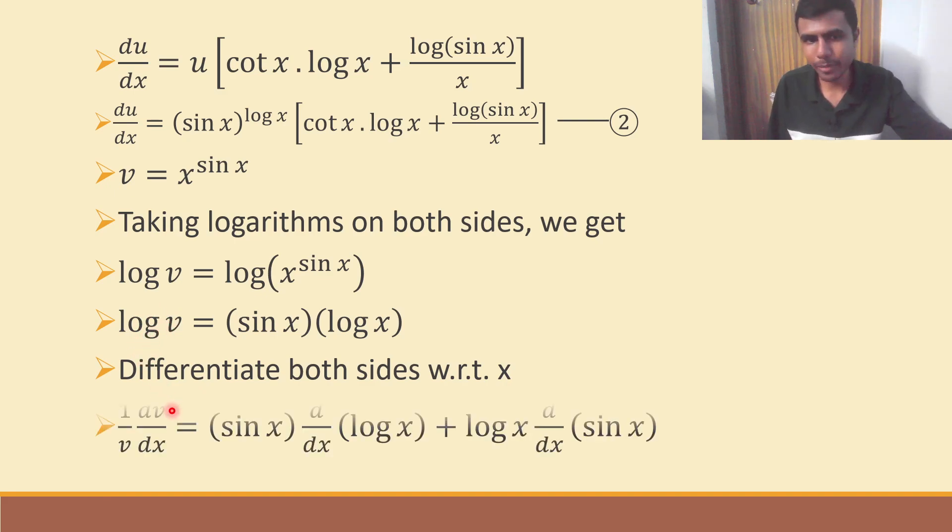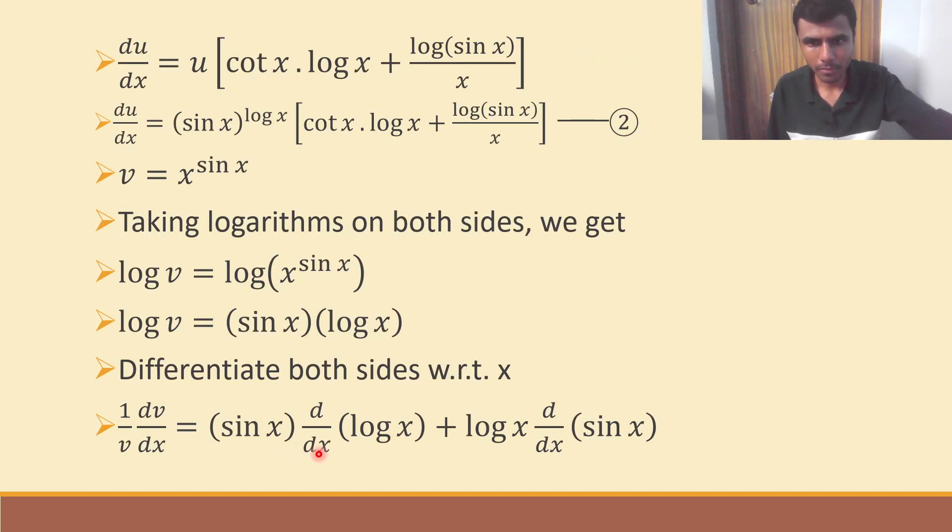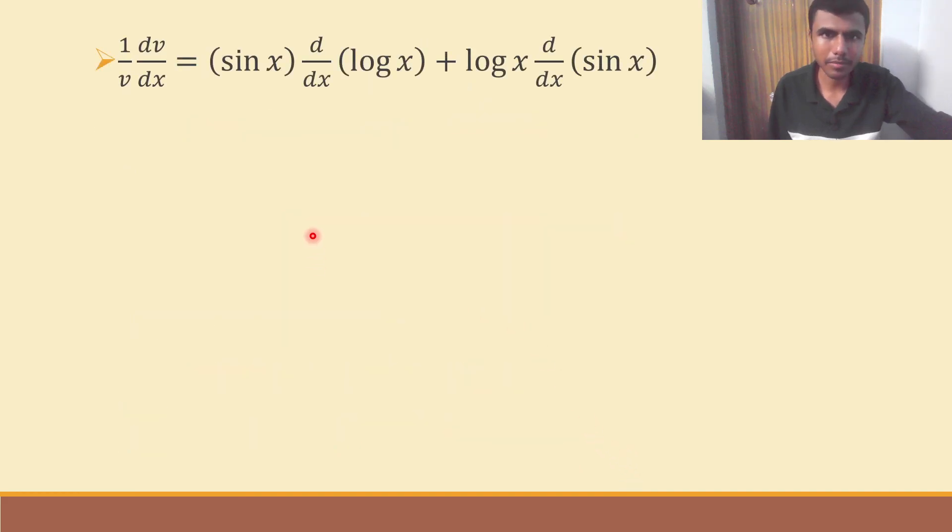Now, 1 by v dv by dx. Sine x into derivative of log x plus log x into derivative of sine x. Again, product rule here. So, 1 by v dv by dx is nothing but sine x into 1 by x plus log x into cos x. Derivative of sine x is cos x.